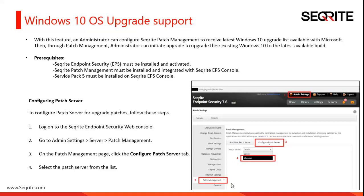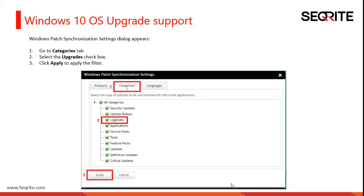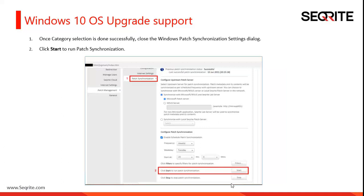Now let's see how to configure the patch server. Step 1: log on to the Securite Endpoint Security web console. Step 2: go to Admin Settings, then Server Patch Management. On the patch management page, click the Configure Patch Server tab and select the patch server from the list. Then go to patch synchronization — select the Patch Synchronization tab and click Filters. A Windows Patch Synchronization Settings dialog appears. Go to the Categories tab, select the Upgrades checkbox, and click Apply to apply the filter.